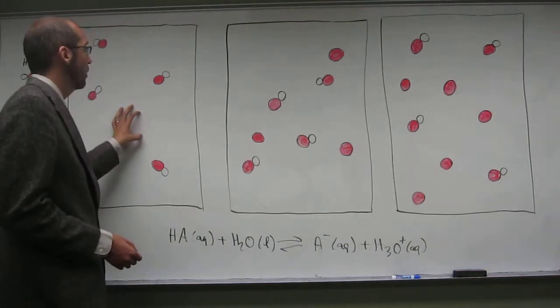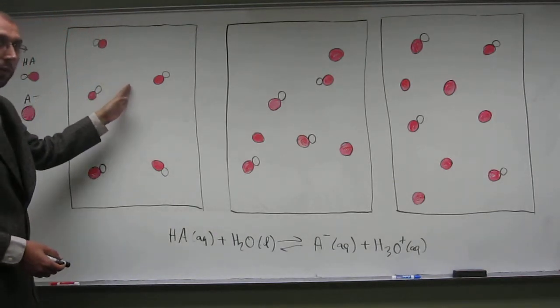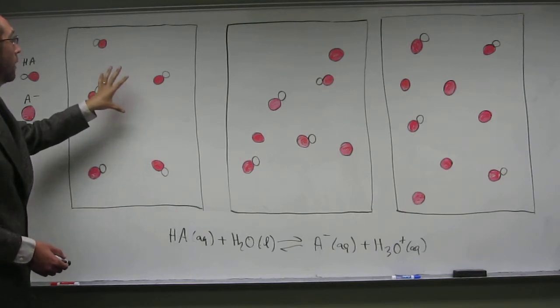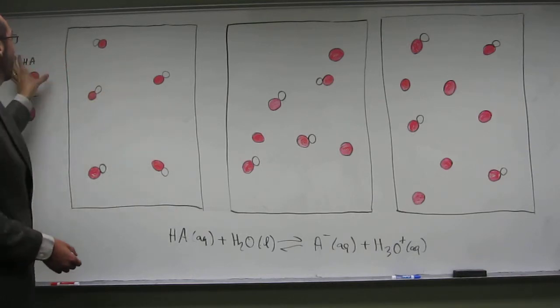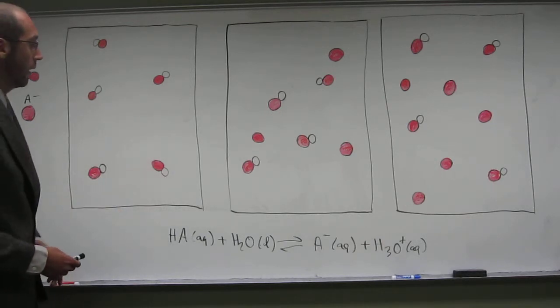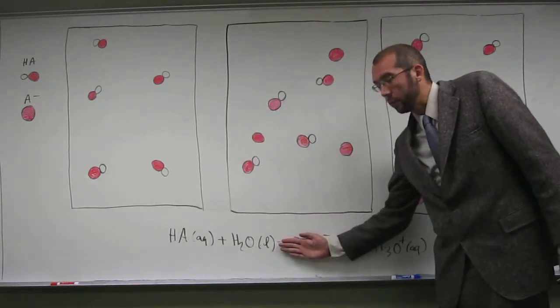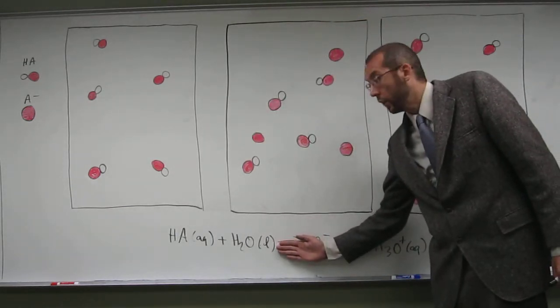So, in this first solution, this is just the starting point of what we've added to the solution. So, in this first solution, we've only added the weak acid. We haven't added any of the salt of its conjugate base. So, in fact, what's happening in this first solution is we don't have any of this part of the reaction going on.